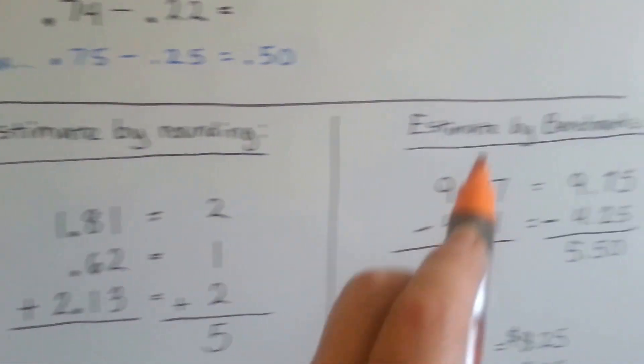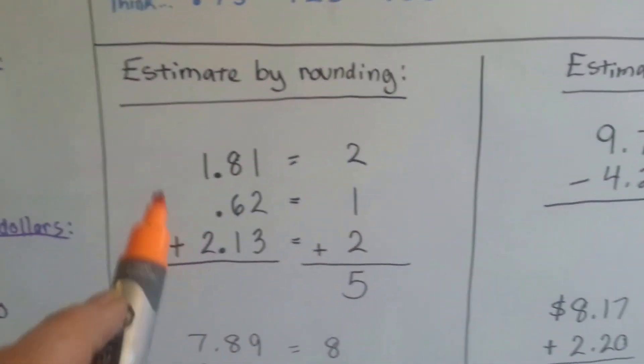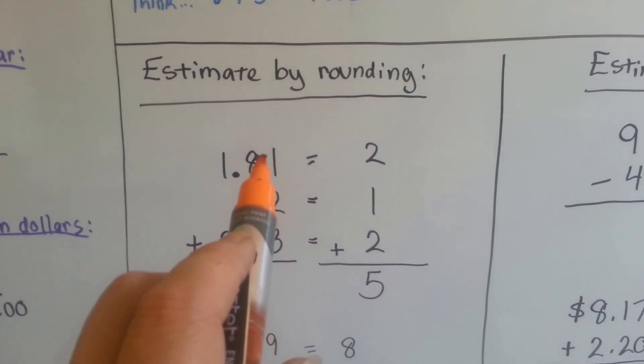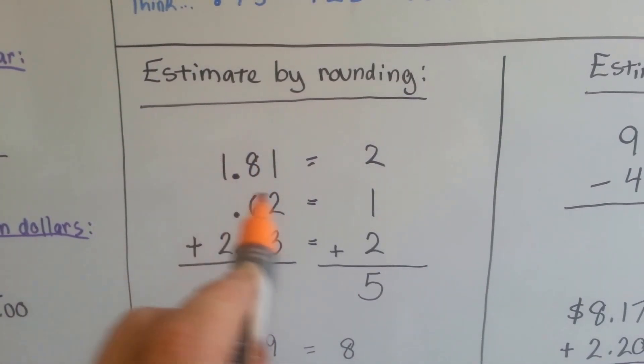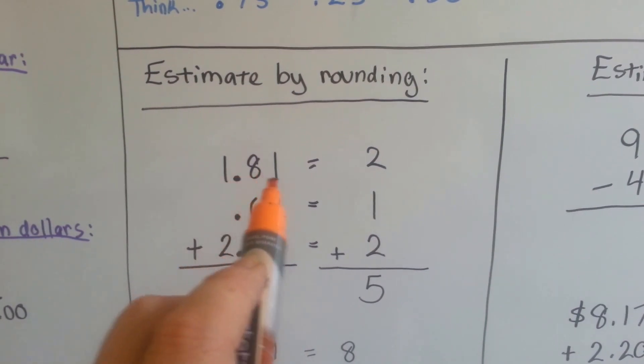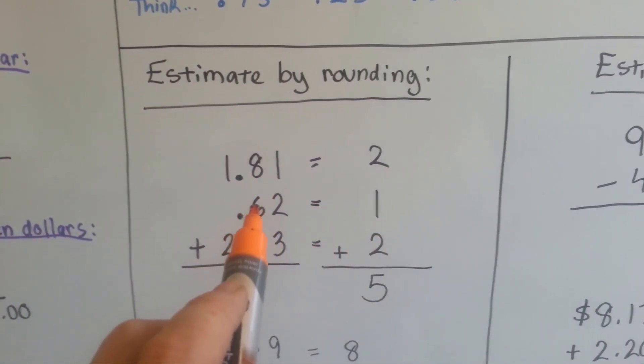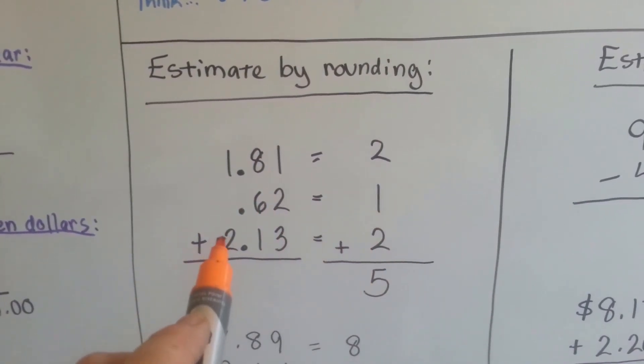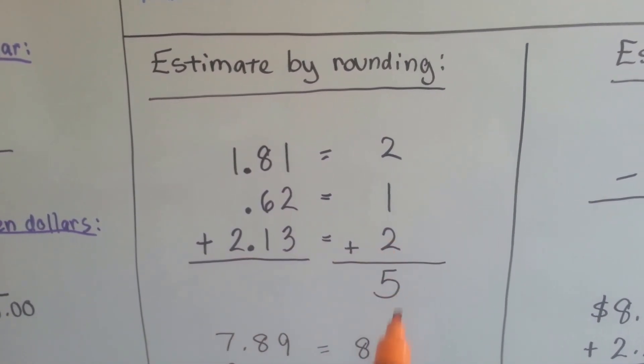So we can estimate by rounding or we can estimate by benchmarks. Estimate by rounding, we use that number to tell us to go up or down to the next number. 1 and 81 hundredths would be 2. 62 hundredths would be 1. And 2 and 13 hundredths would stay 2. And we'd have 5.